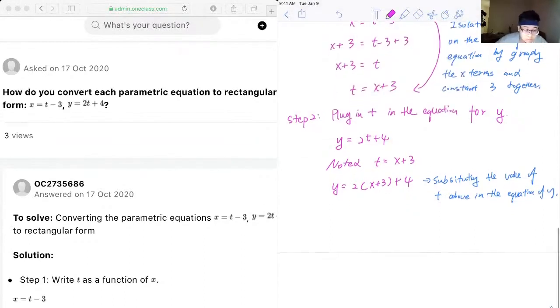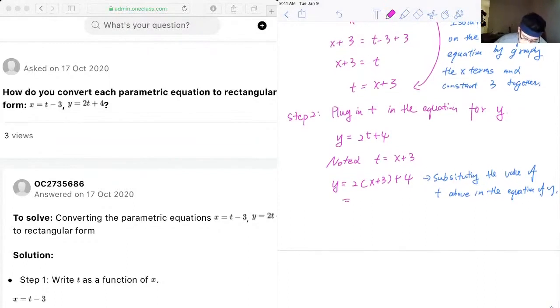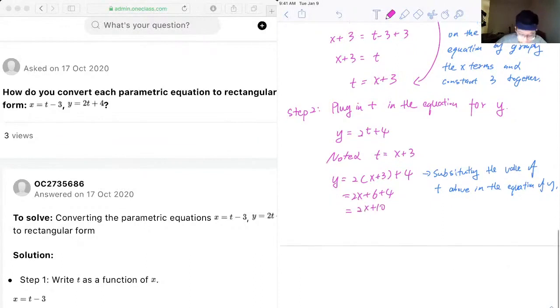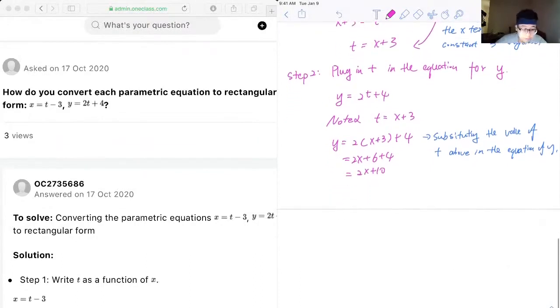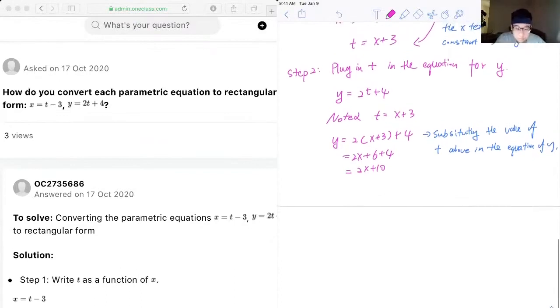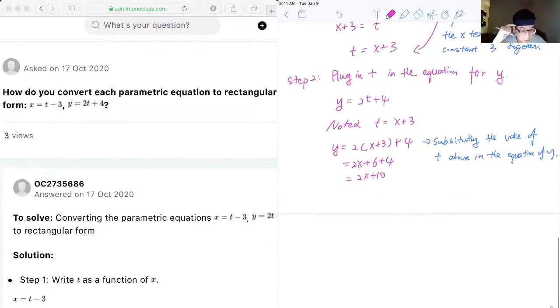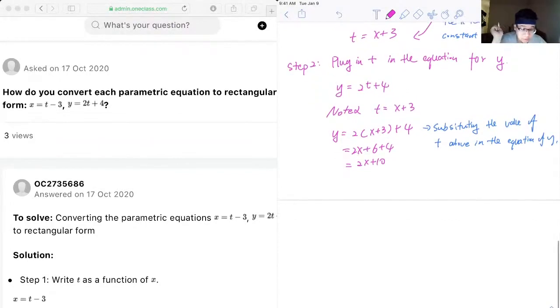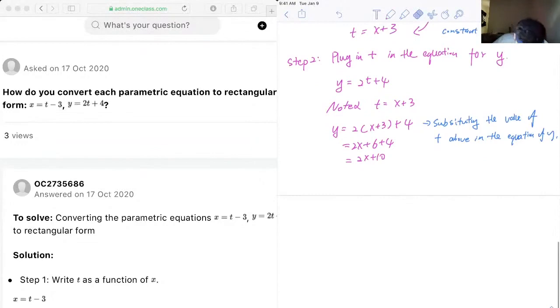Okay, so we will have 2x plus 6 plus 4, which will be equal to 2x plus 10. We're just simplifying by distributing the coefficient in the terms inside the parenthesis, and then we'll just further simplify by adding the constant terms. So we have 2x plus 10.